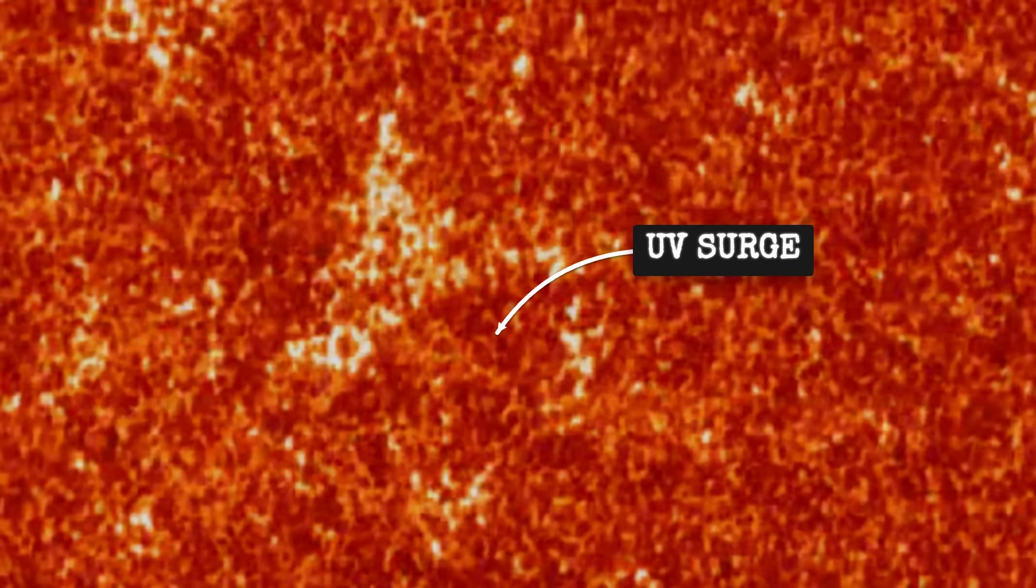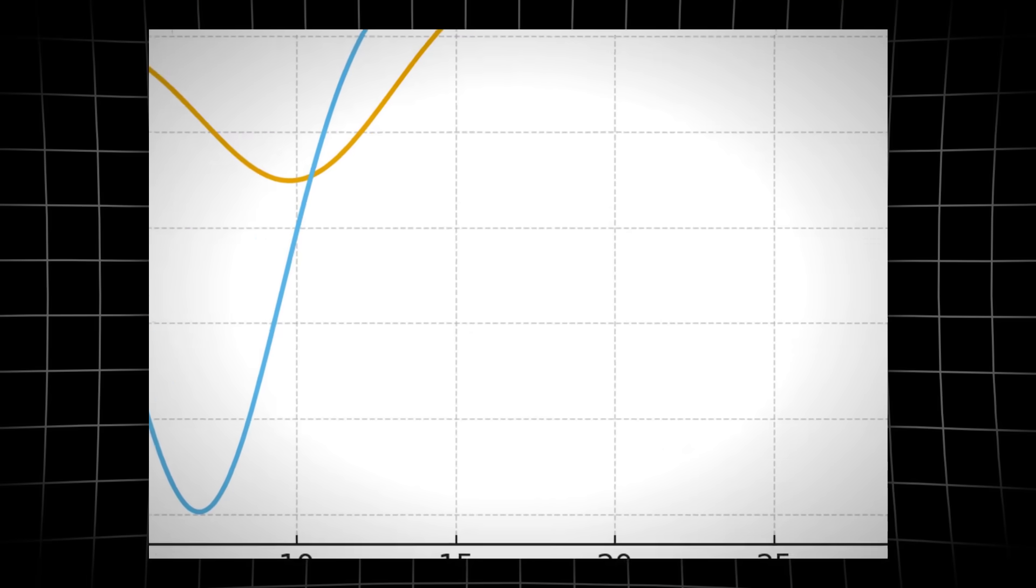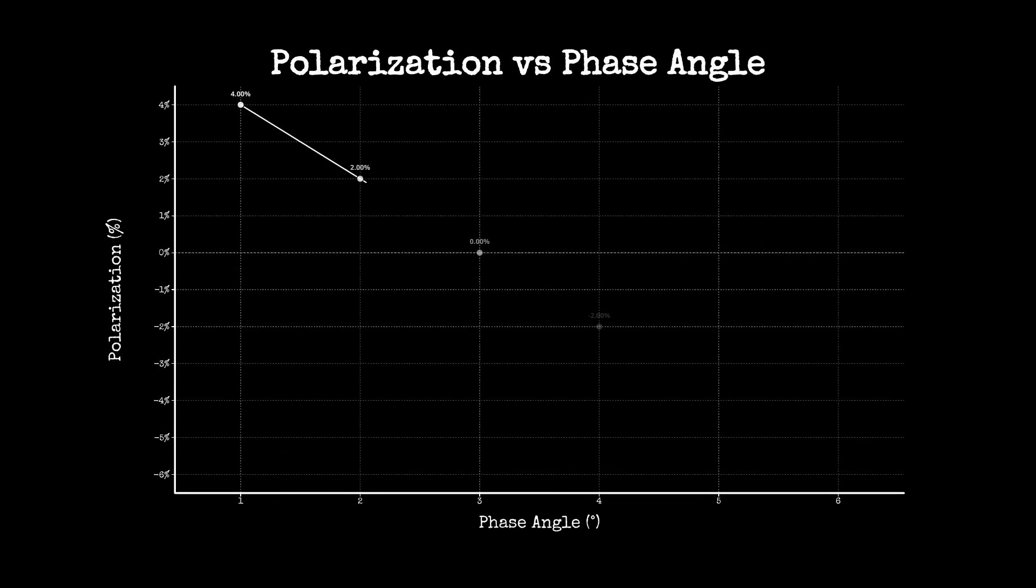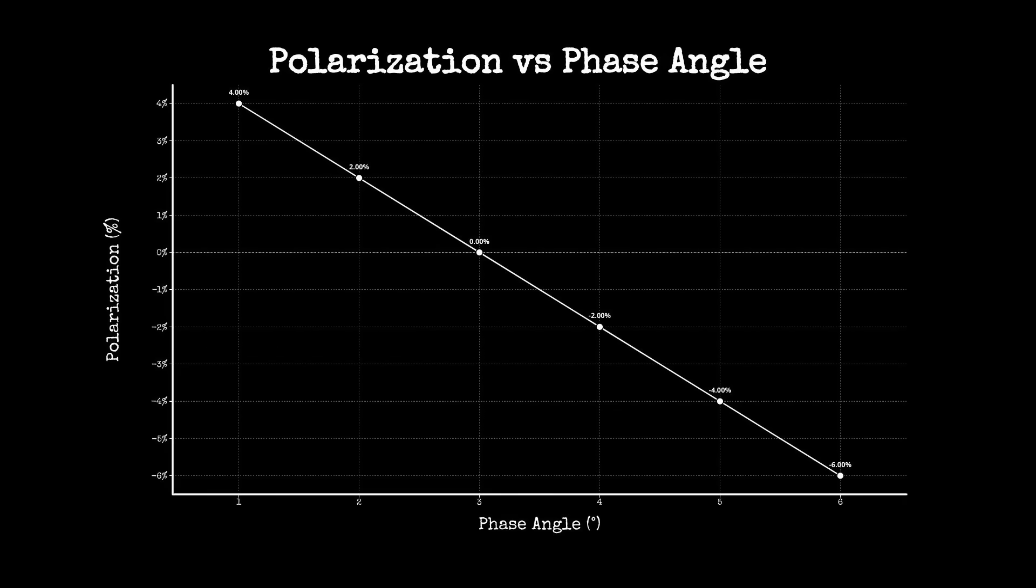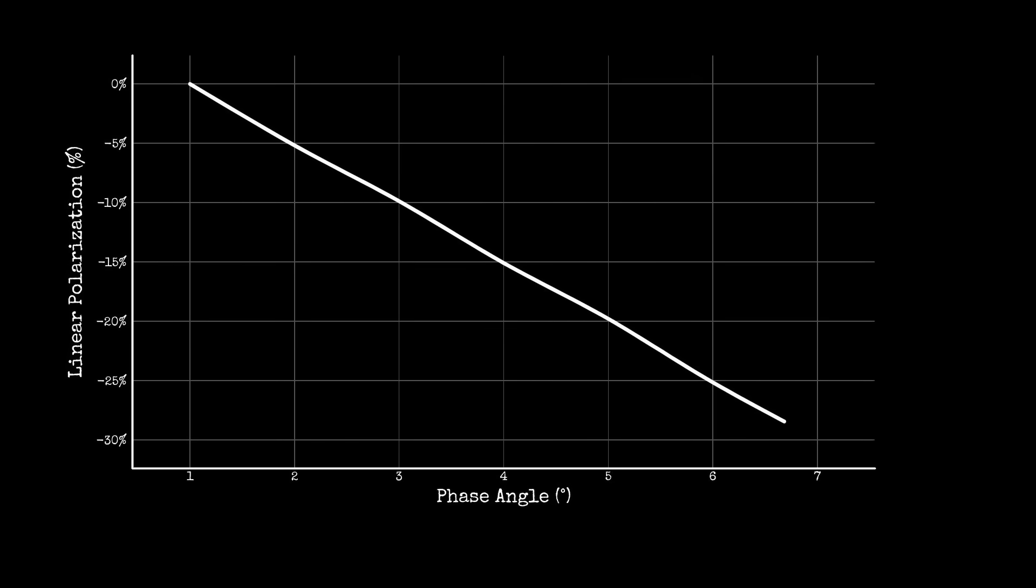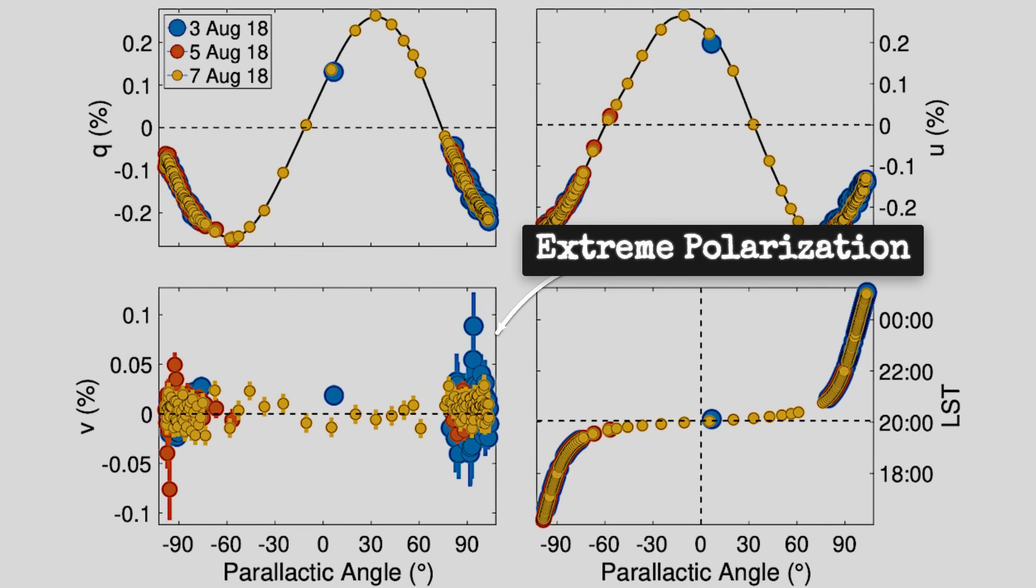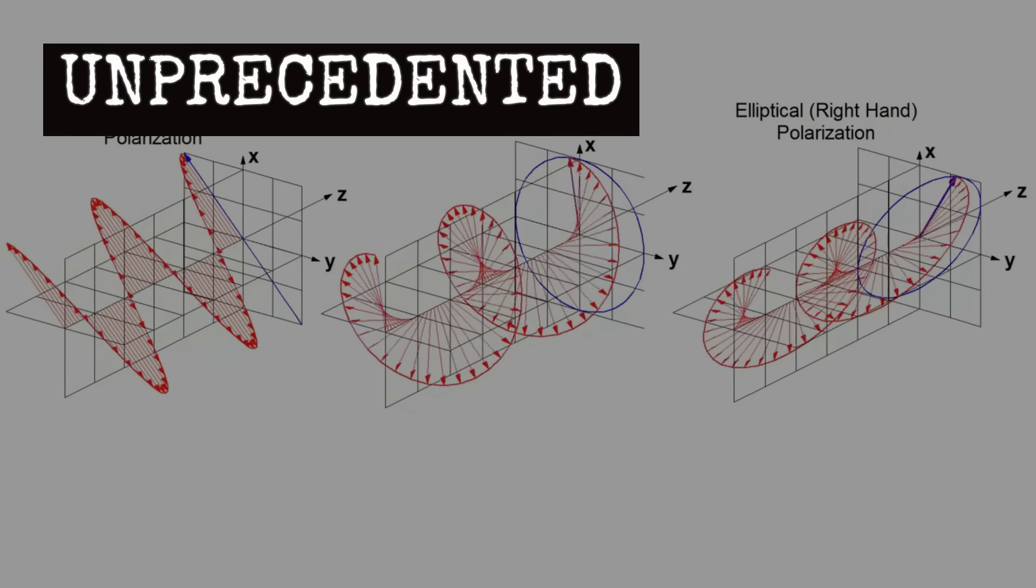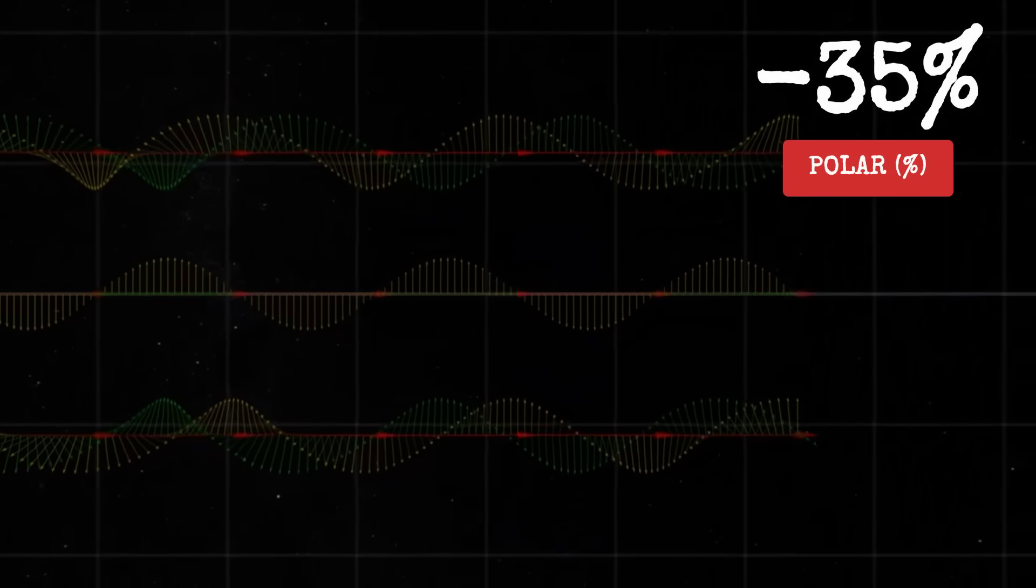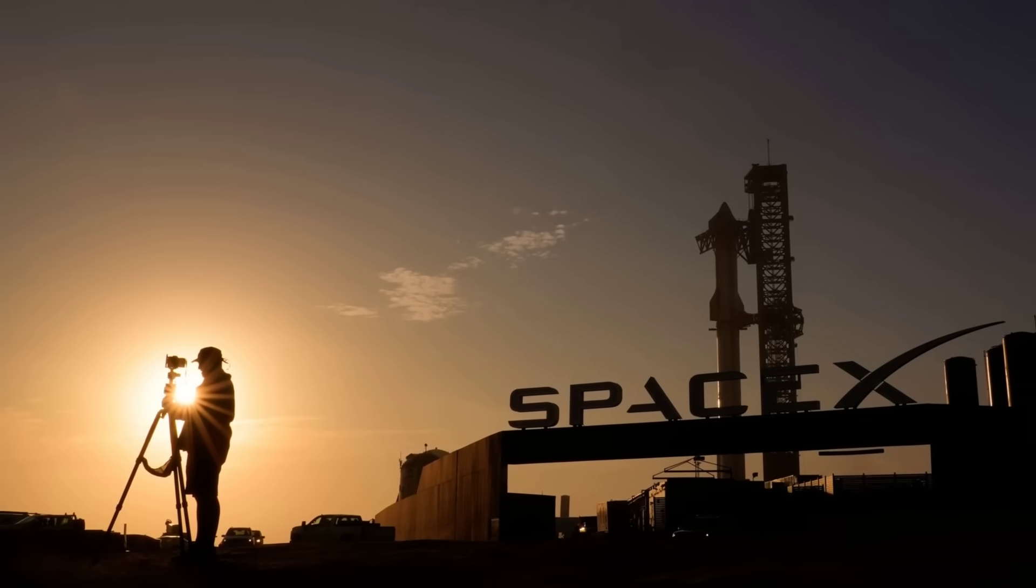Now, let's examine the polarization data, because this is where things get truly anomalous. This graph shows the degree of polarization versus phase angle. 3I/Atlas exhibits the most extreme negative polarization curve ever recorded for any astronomical object. Normally, we'd see values in this range, but 3I/Atlas shows values way down here. This suggests an extremely unusual surface texture or composition that we don't fully understand.